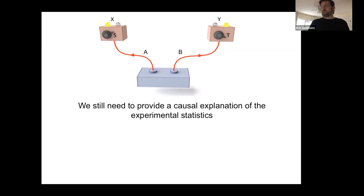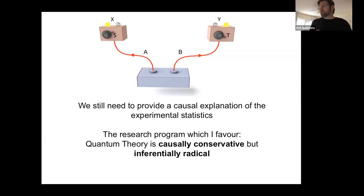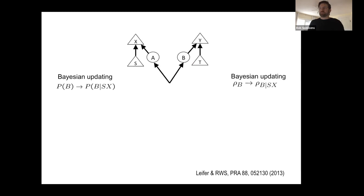The idea is we should still seek a causal explanation — that's what getting at the underlying reality is about. What I favor is an interpretation of quantum theory that is causally conservative but radical in the theory of inference it uses. The way we ought to update our beliefs in the presence of unobserved systems is not classical probability theory, but an innovation of it. I'll give a brief sketch to give you a flavor, and by the end of the talk I'll tell you where I think the research program should go.